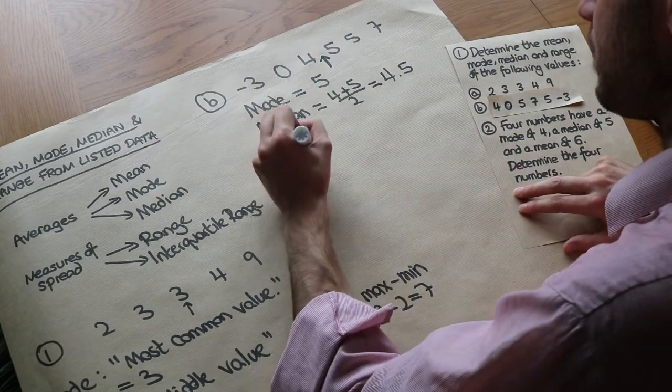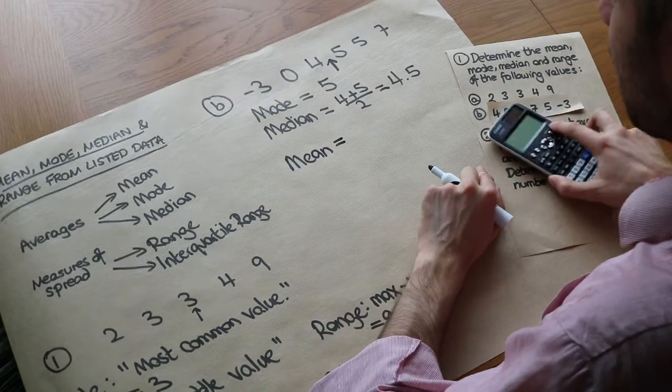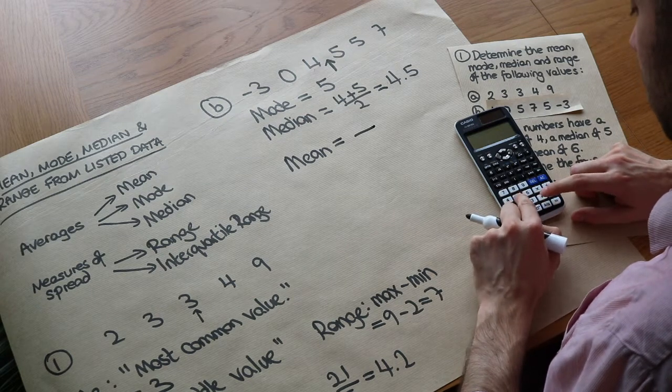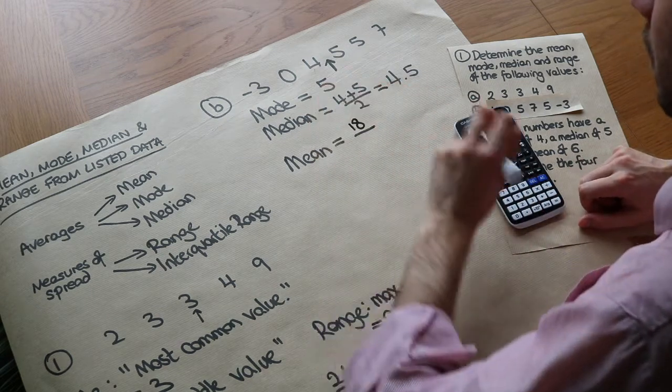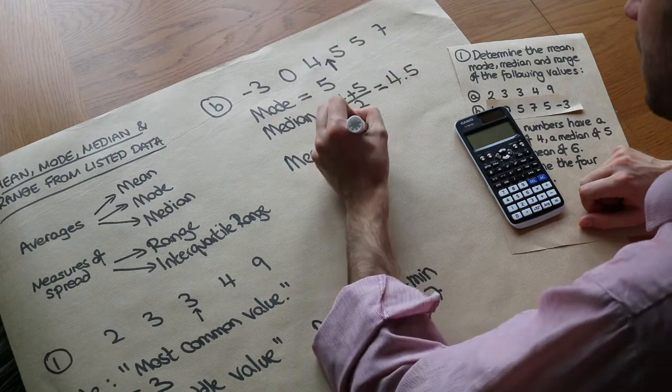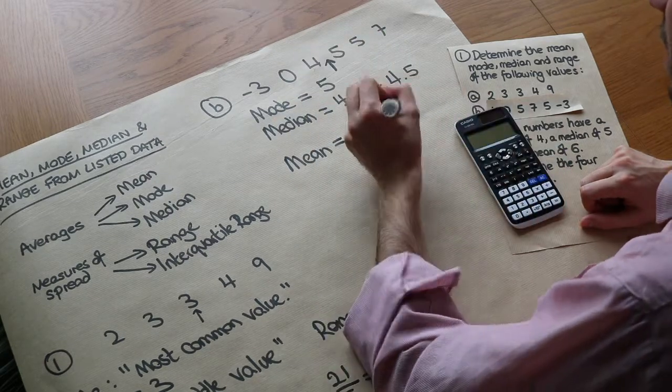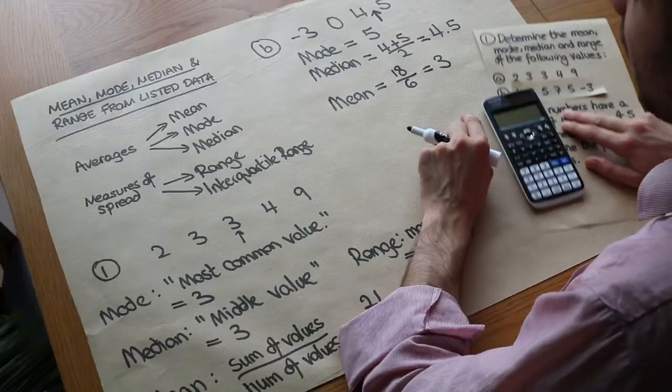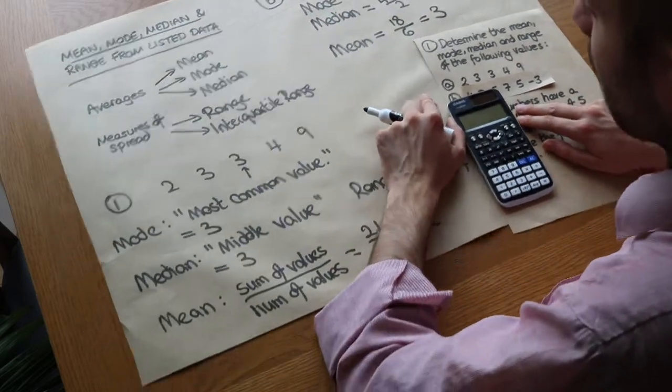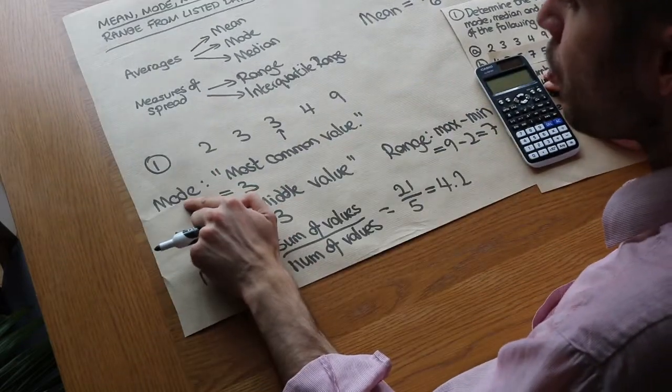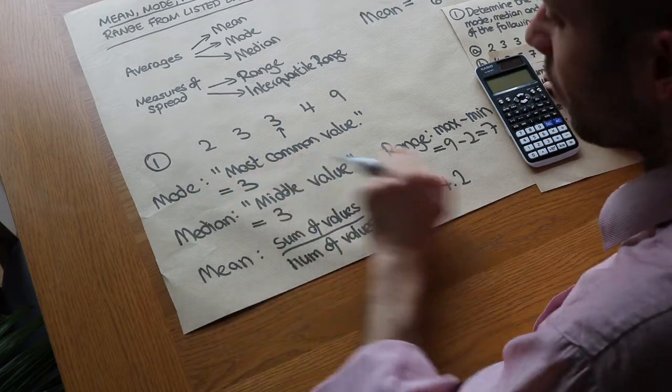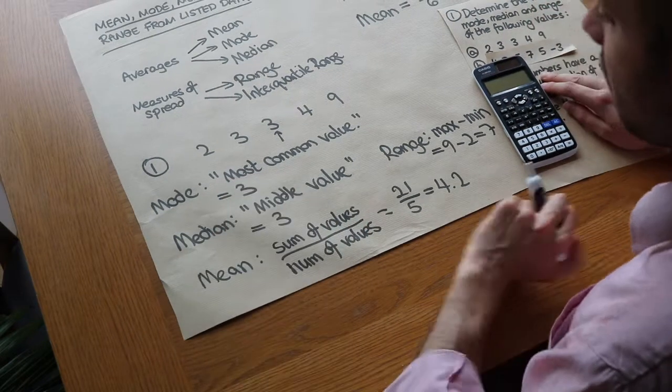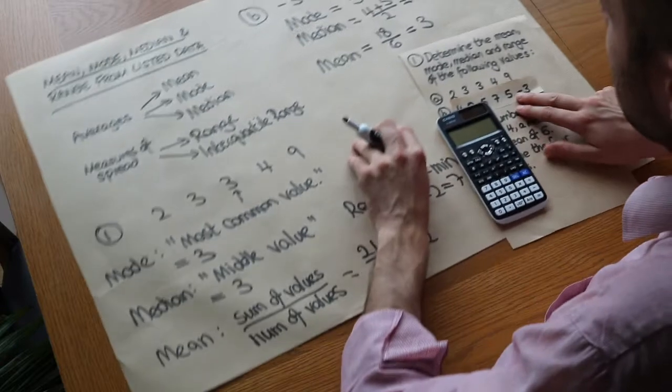And finally the mean. We just add them up and divide by how many values there are. So they add up to minus 3 plus 0 plus 4 plus 5 plus 5 plus 7, which is 18, divided by the number of values which is 6. 18 divided by 6 equals 3. You can see all our different averages were different this time. By the way, the sound of the word helps us remember what kind of average is which. Mode sounds like most - mode, most common. Median sounds like middle - median, middle. And the mean is like the mean one because you have to do the most calculation.